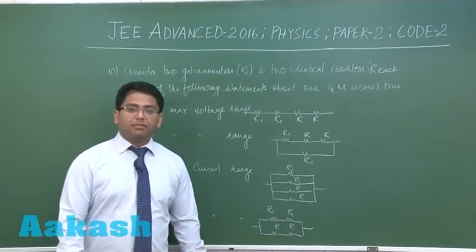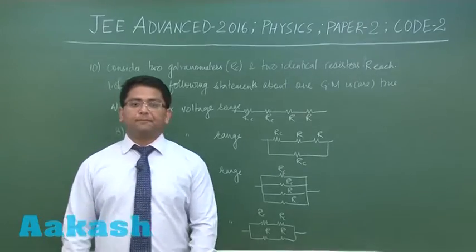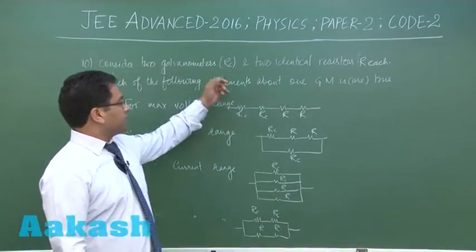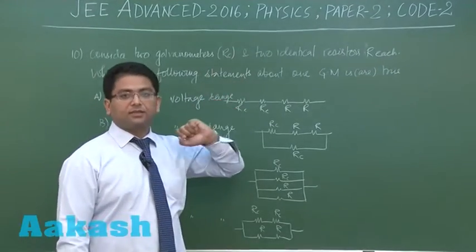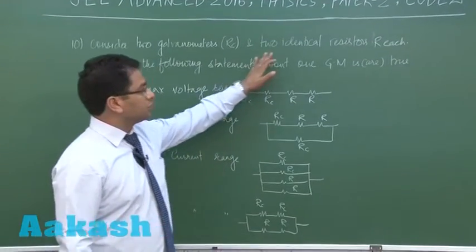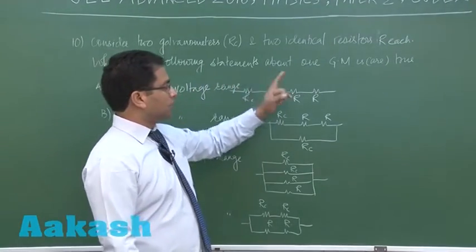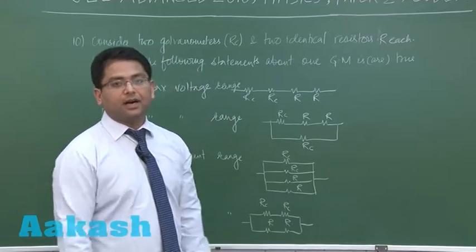Question number 10 is from measuring instruments, and this time galvanometer. Consider two galvanometers G and RC is the resistance of one galvanometer each and two identical resistors R. Which of the following statements about one galvanometer are true?